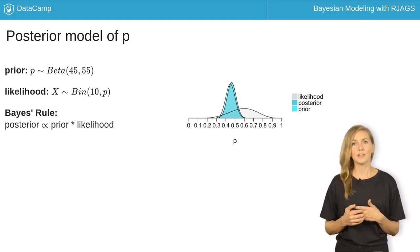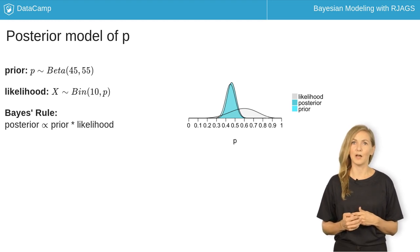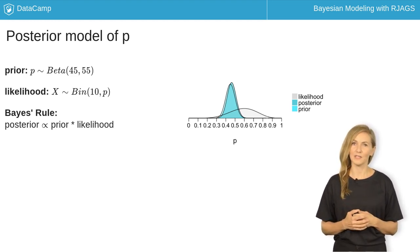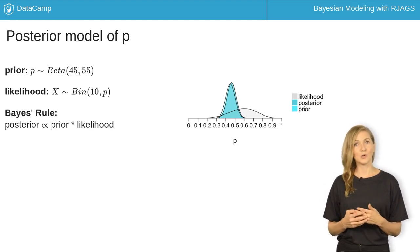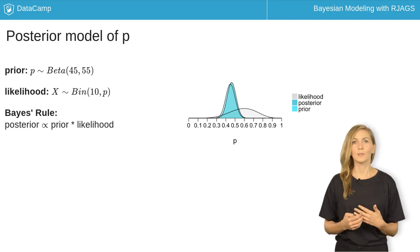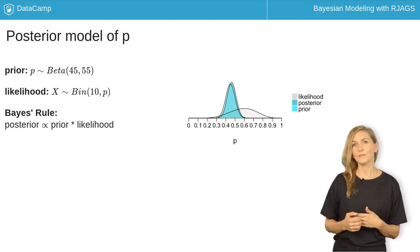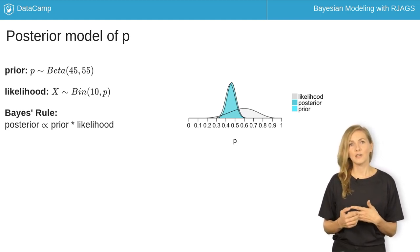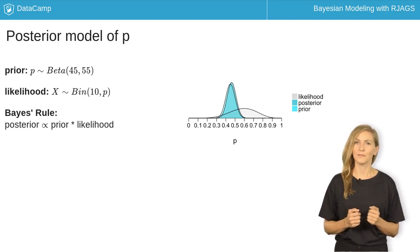The posterior model combines the insights from the prior and likelihood. Here, the posterior reflects increased optimism about your election chances in light of the small but optimistic polling data. In the previous course, you learned that the exact specification of the posterior can be obtained through Bayes' rule. Specifically, the posterior is proportional to the product of the likelihood and prior.